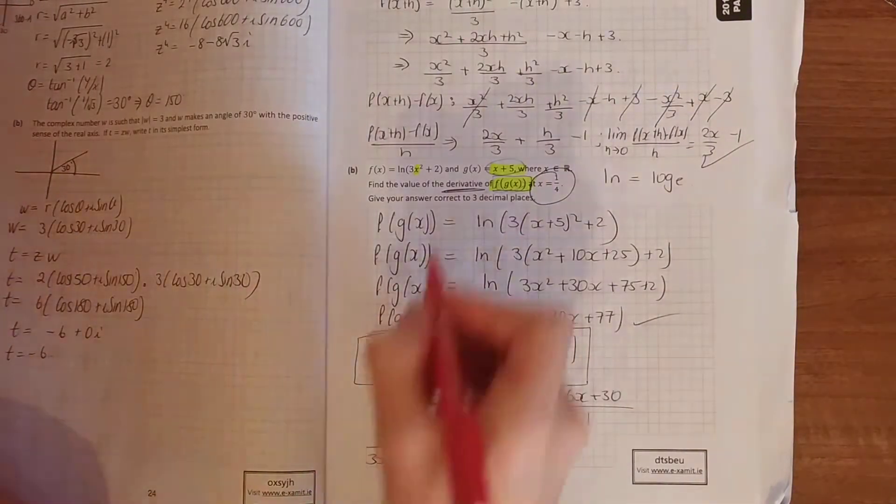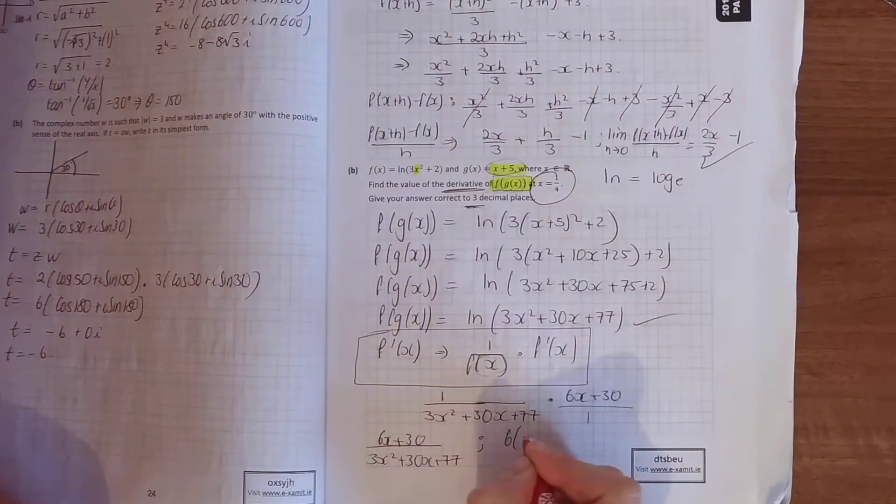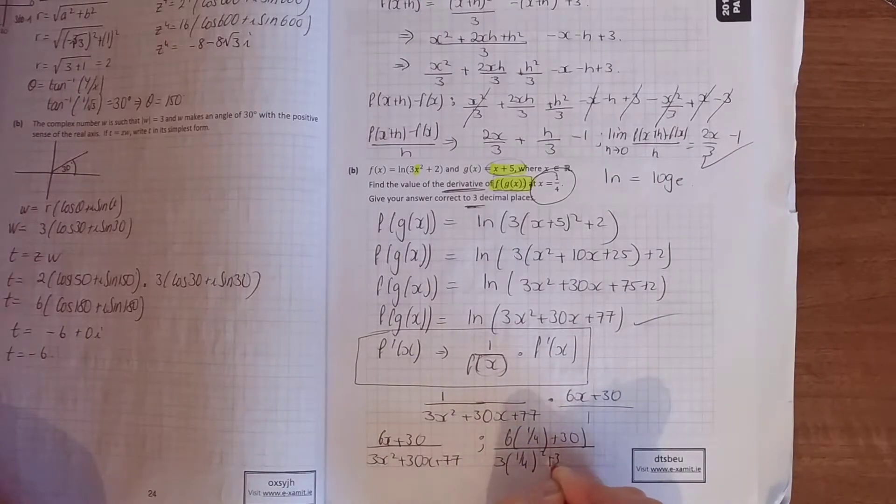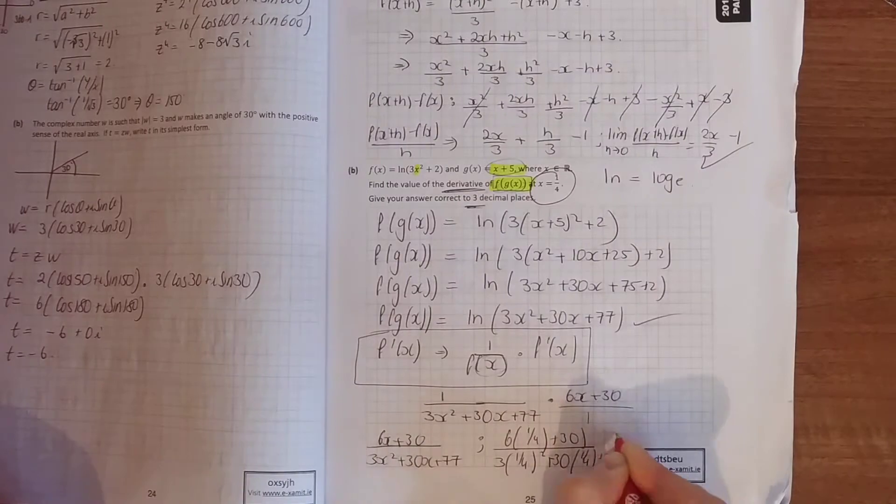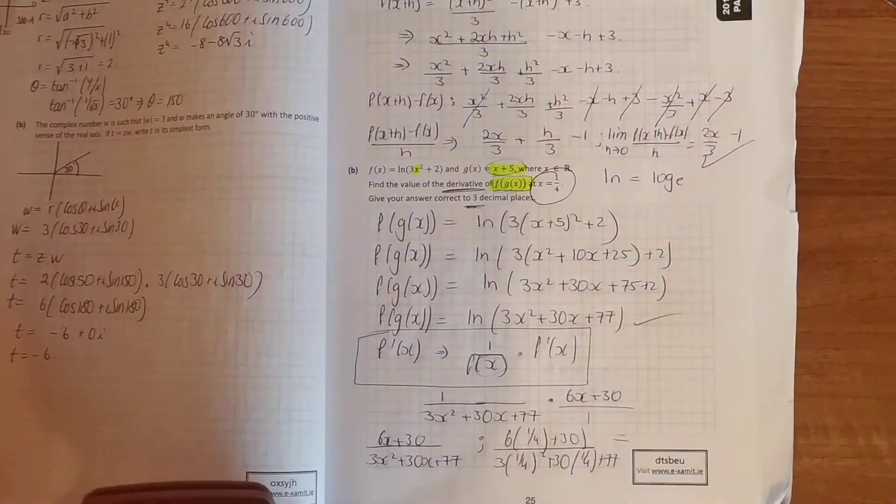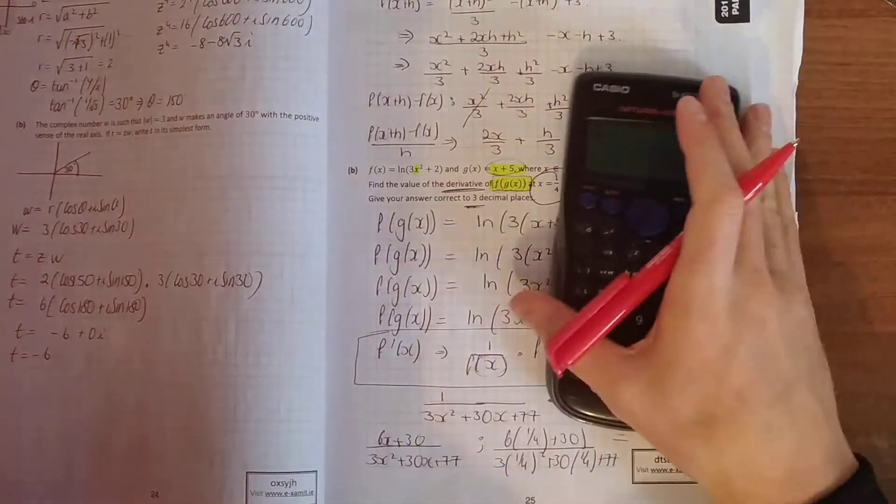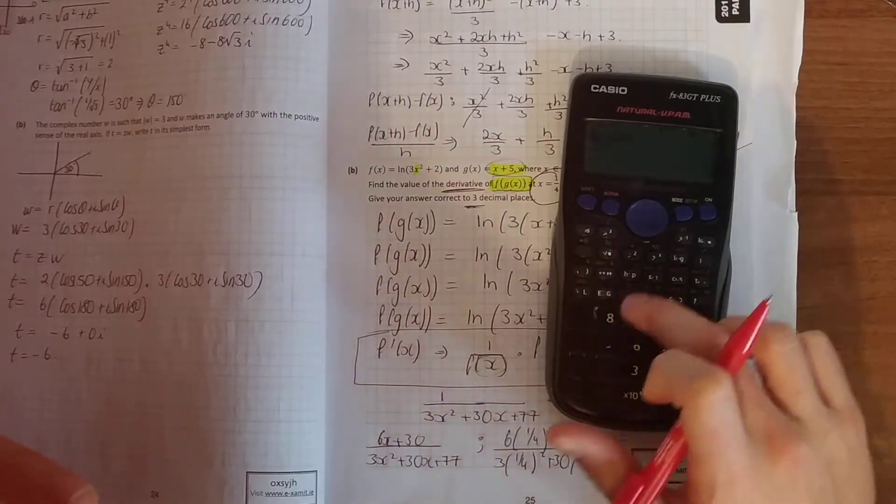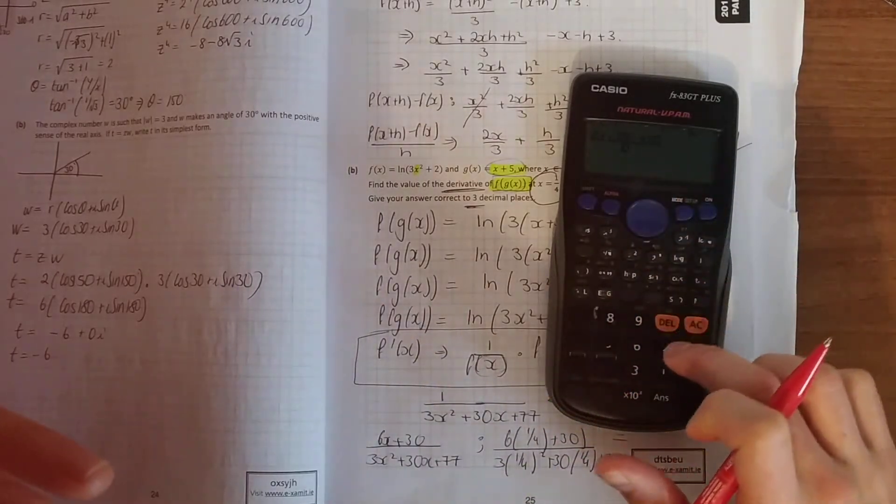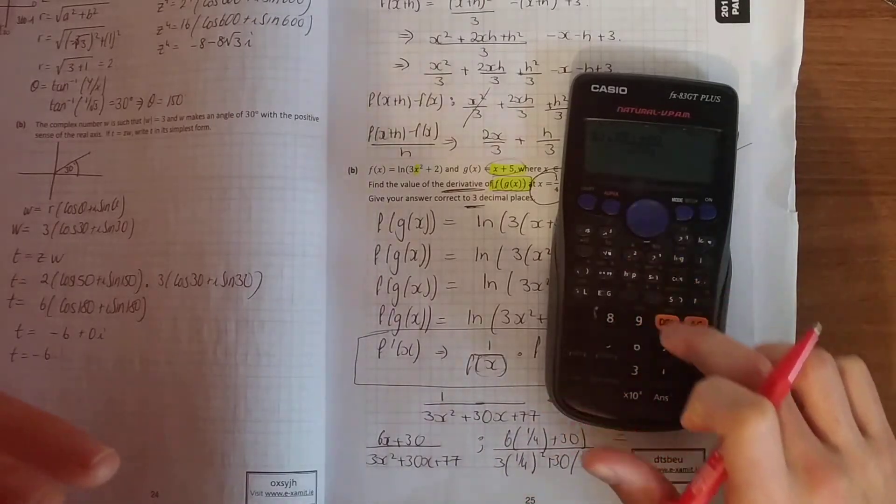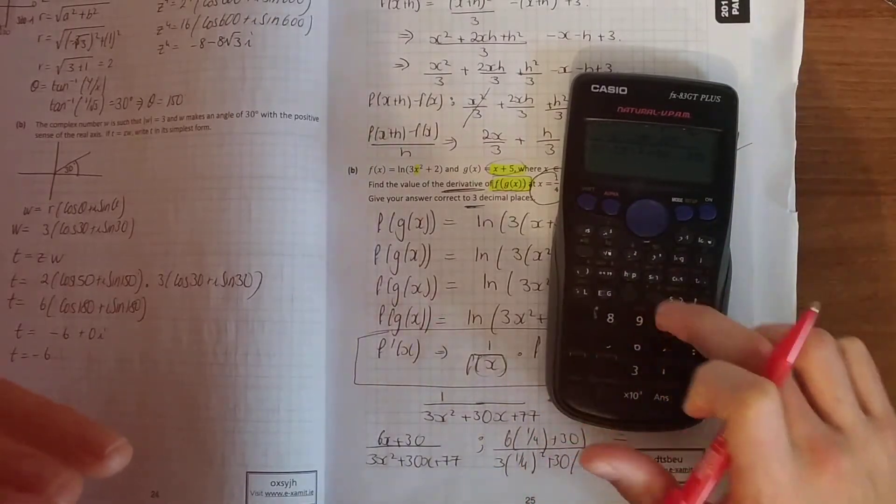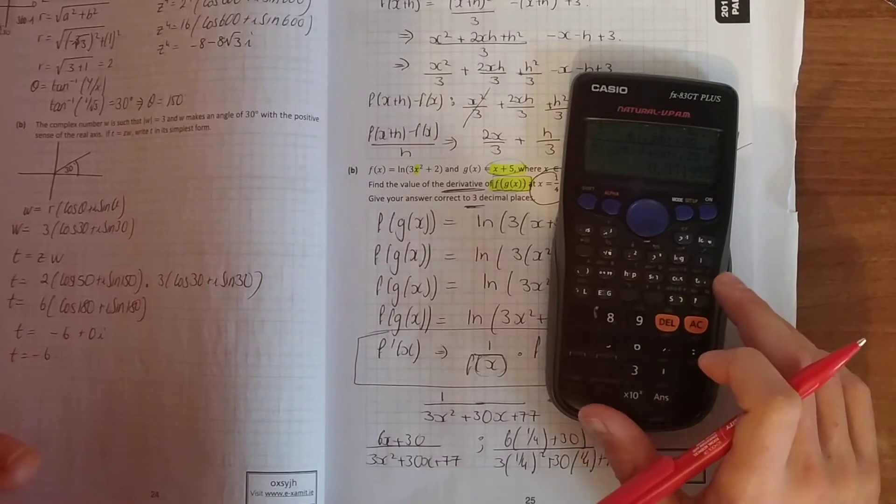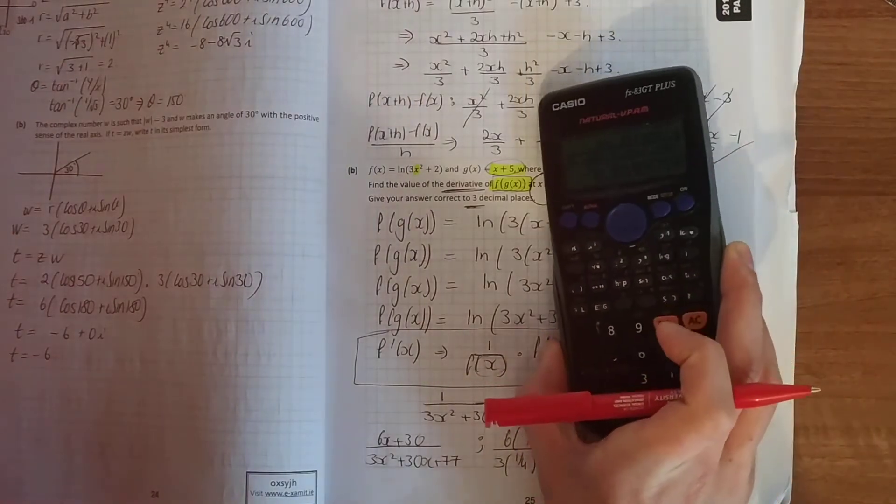And then the final step, x is equal to a quarter. And give your answer to three decimal places, sub in a quarter. Simply lob that into your calculator. That will give you the slope of the tangent at that point. 0.372.